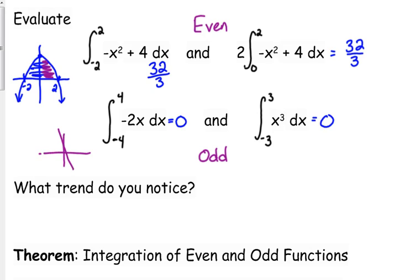Negative 2x goes through the origin. Didn't draw that very well, but it's a line that goes through the origin, so that's why its integral from negative 4 to positive 4 is zero. Because you've got positive area right here and you have the exact amount of negative area canceling it out.